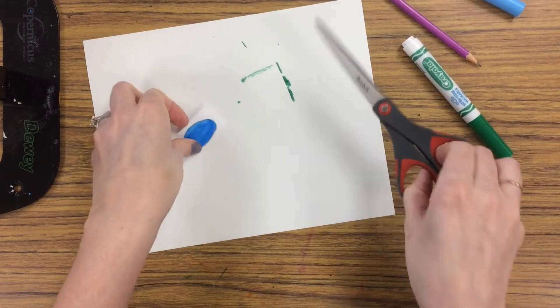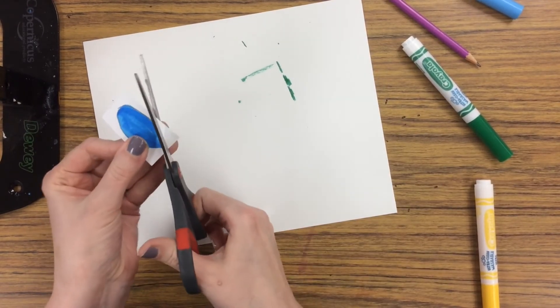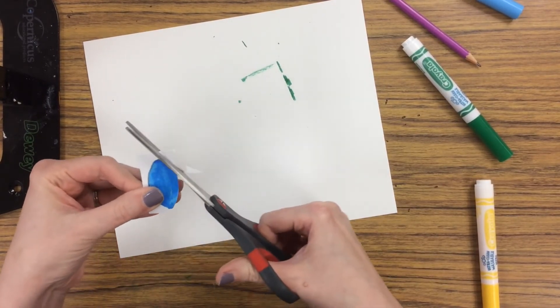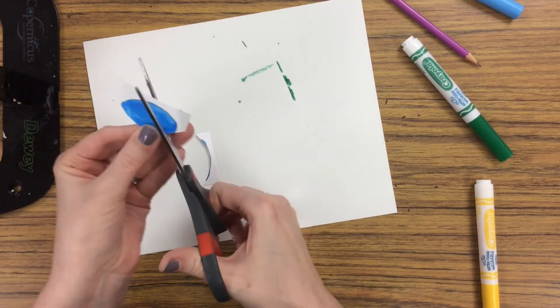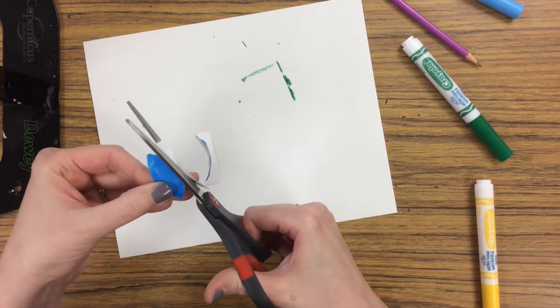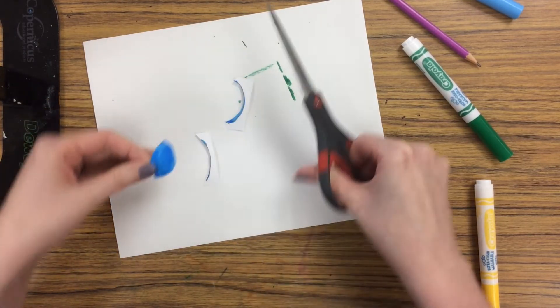And then go ahead and cut that out. And you could either use this for a bird's wing, or you could do a bunch of these and layer them on a bird to give it some really cool texture.